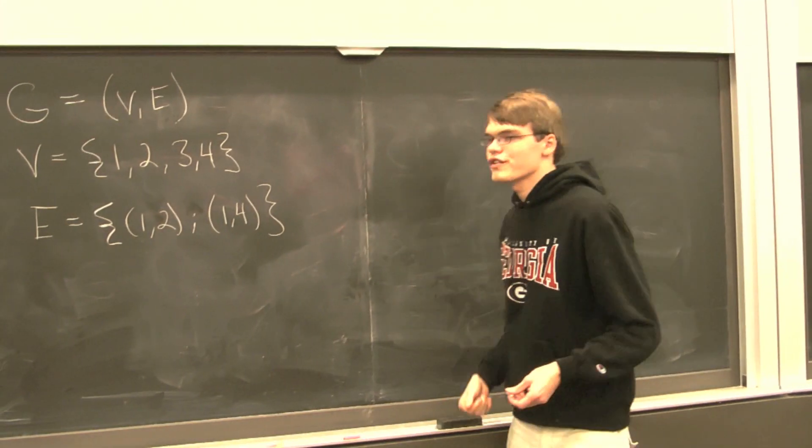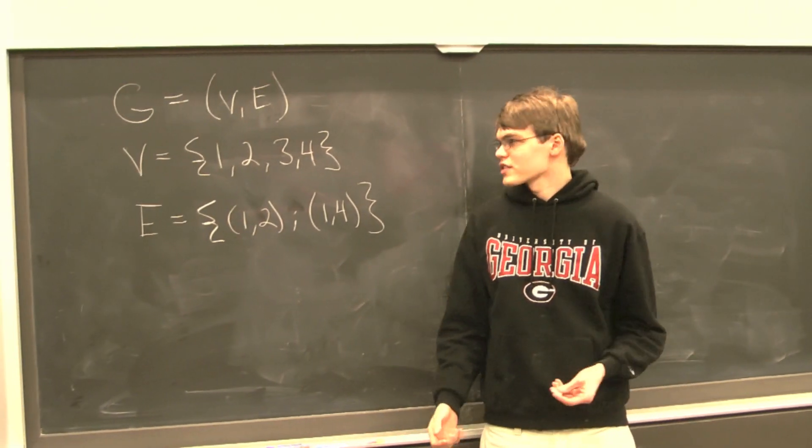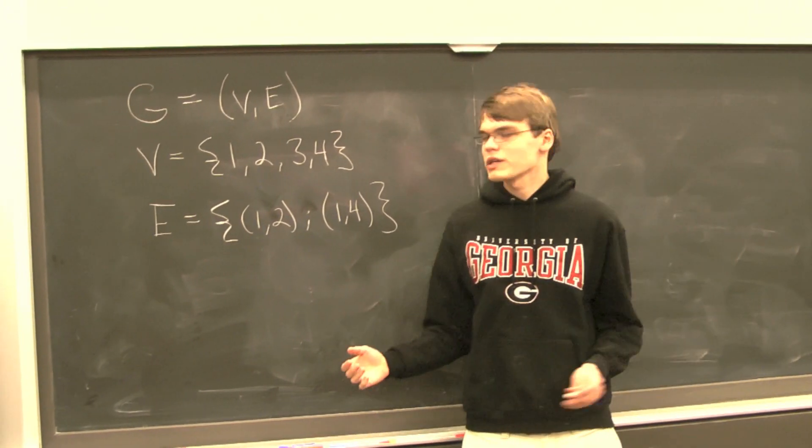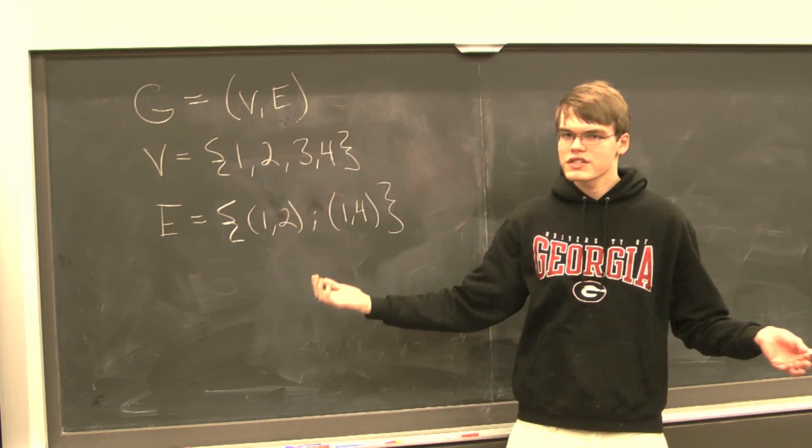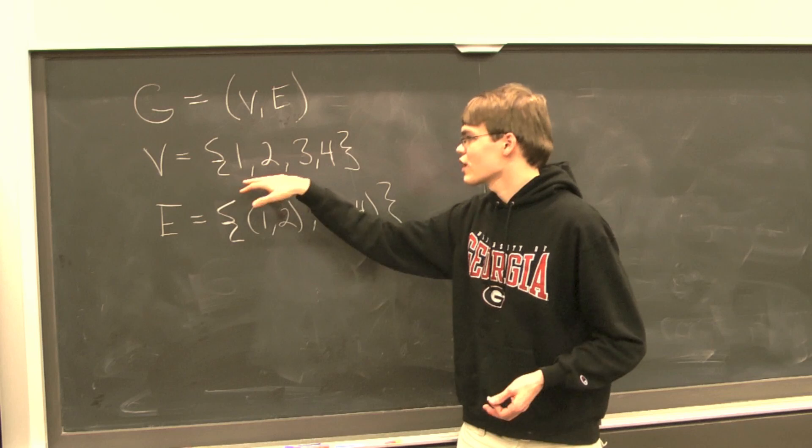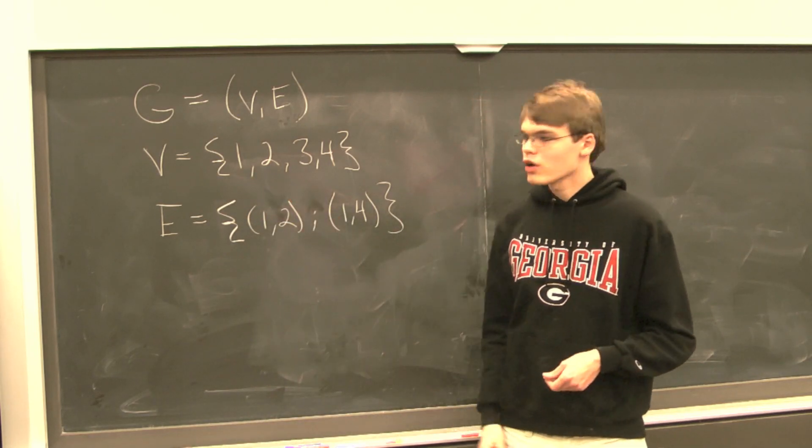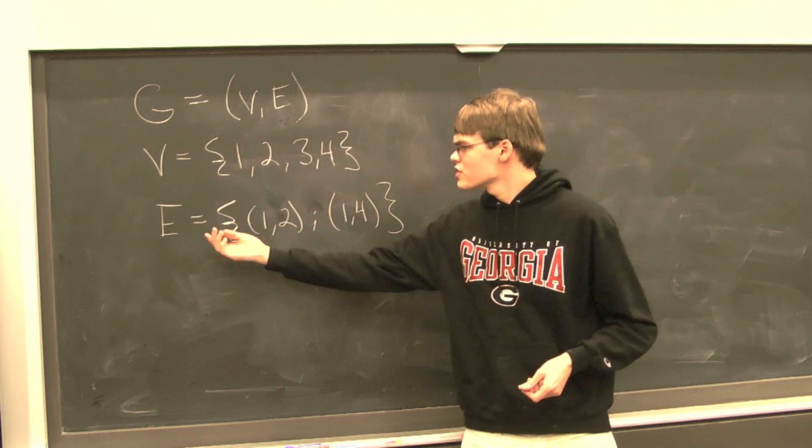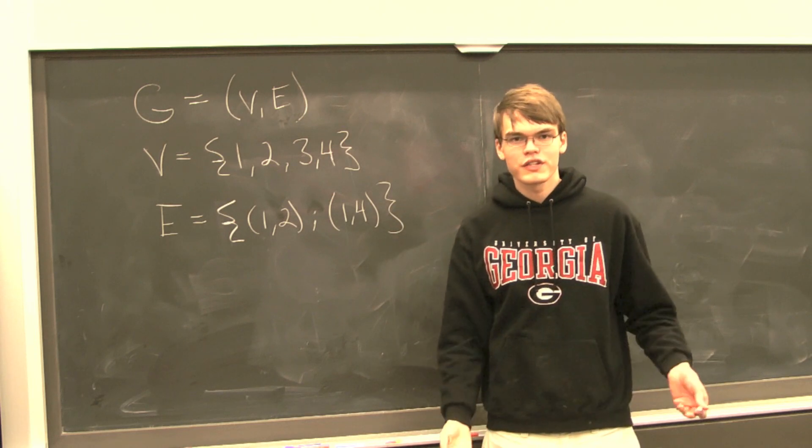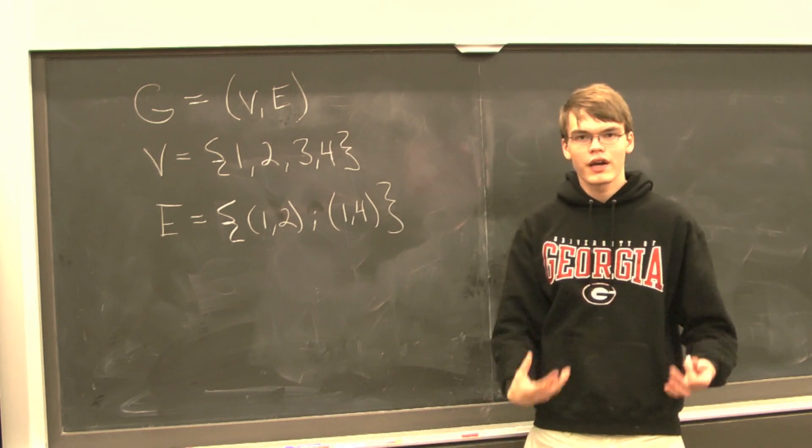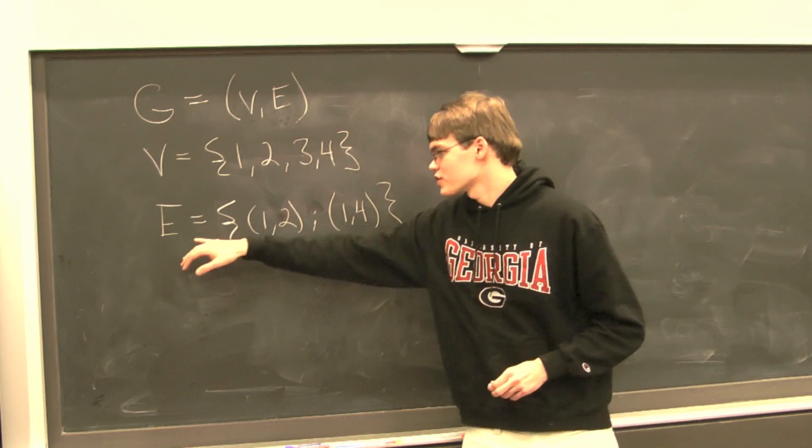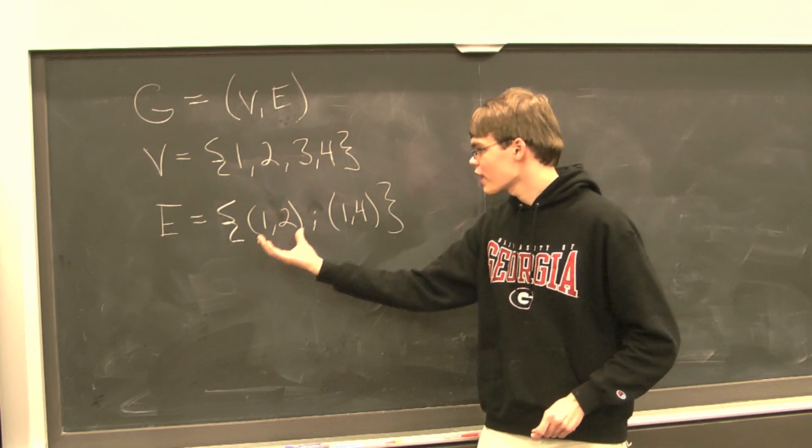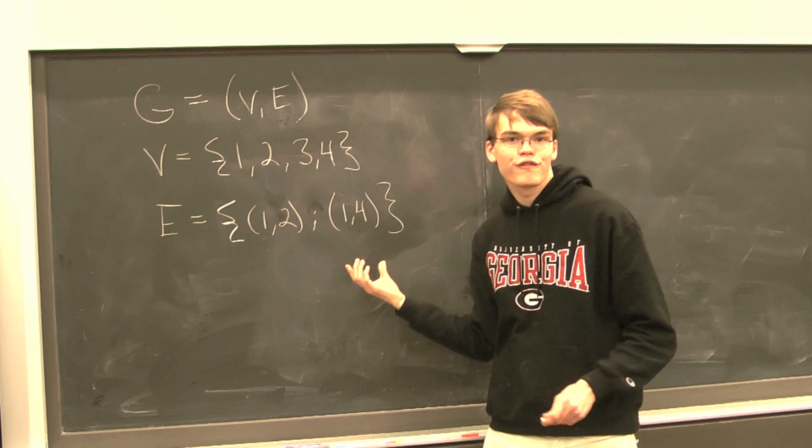First we want to define a graph in the graph theoretic sense. A graph is quite simply a set of vertices and a set of edges. For convenience I've labeled our set of vertices 1, 2, 3, and 4, and our set of edges is a set of pairs of our vertices. For example, we might have the pair 1, 2 and the pair 1, 4.